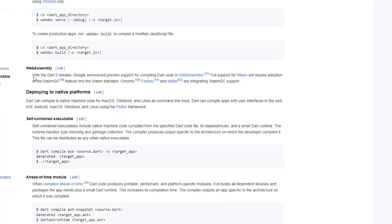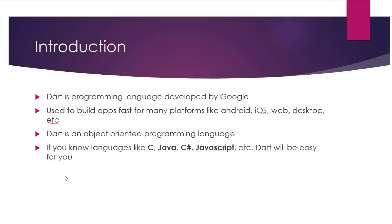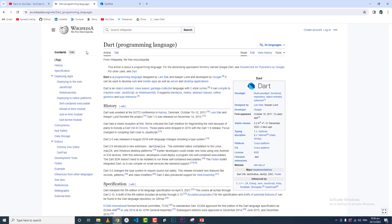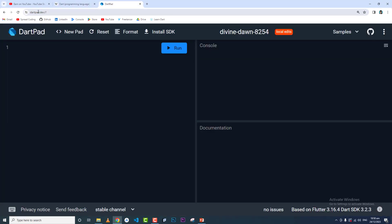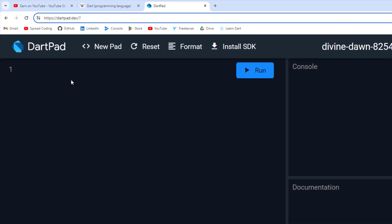Now we will practice our basic programs. There are two methods to run Dart programs. The first one is online — there is an online tool called dartpad.dev. This is an official website where you can write your programs without any configuration.